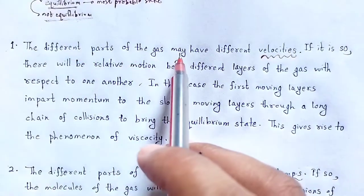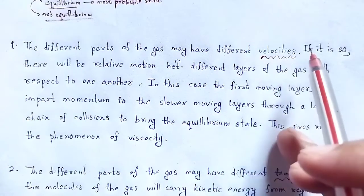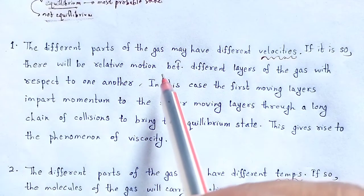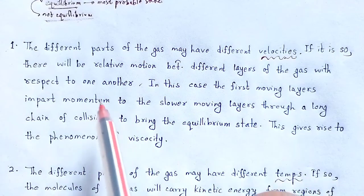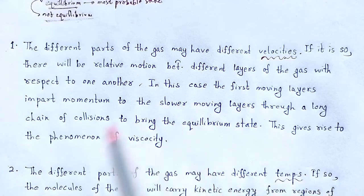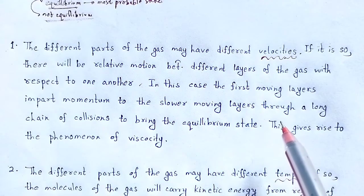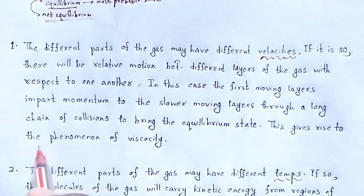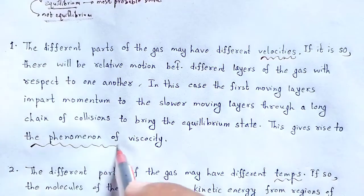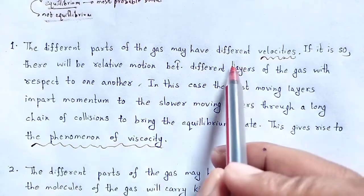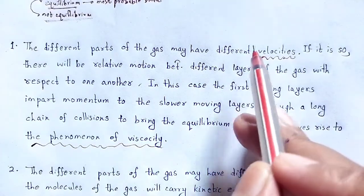The different parts of the gas may have different velocities. If it is so, there will be relative motion between different layers of the gas with respect to one another. In this case, the fast moving layers impart momentum to the lower moving layers through a long chain of collisions to bring the gas to equilibrium state. This gives rise to the phenomenon of viscosity.